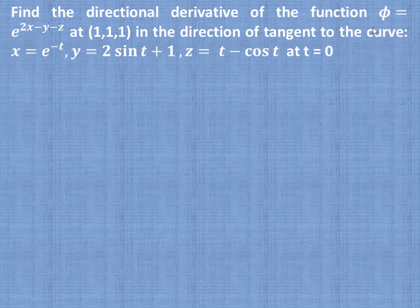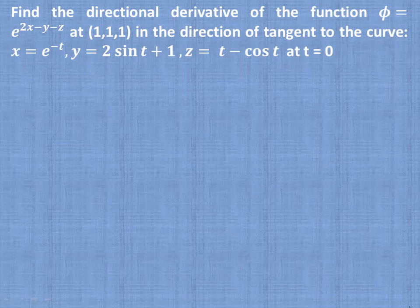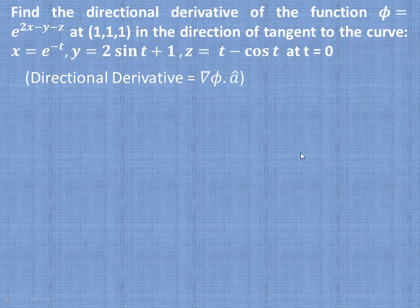We have this scalar point function φ = e^(2x - y - z) at point (1, 1, 1), and the direction is along the tangent to the curve given by x, y, z. First, write the formula: the directional derivative is equal to del φ dot â, so we need to find del φ and â.